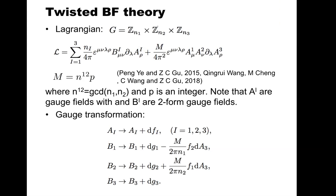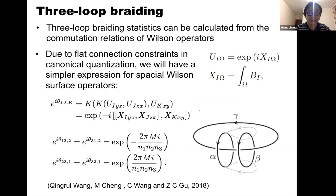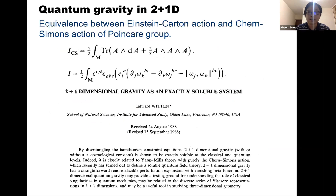Now I try to make a connection with gravity theory. The reason I think this connection is natural is that in 2+1D, about three decades ago, we can propose a very nice one-to-one correspondence between the Einstein-Cartan action and the Chern-Simons action of the Poincaré group.